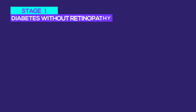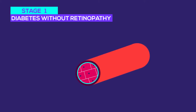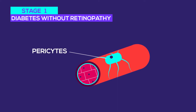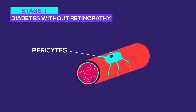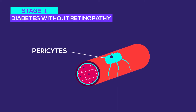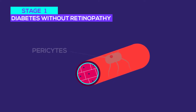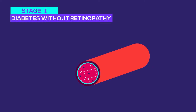It has three stages. The first stage is called diabetes without retinopathy. The walls of micro blood vessels are covered by a type of cell called pericytes. In this first stage, pericytes of the retinal vessels are slowly damaged, but the retina will appear normal in eye examinations and you will have no symptoms.